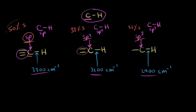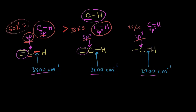Going back to the sp-hybridized carbon — that orbital has 50% s-character, which means the electron density is closest to the nucleus. So this is the shortest bond, because the electron density is closest to the nucleus the more s-character you have. And if it's the shortest bond, it must also be the strongest bond. The sp bond is stronger than the sp-2 C-H bond, and the sp-2 bond has more s-character than sp-3, so it too is stronger.